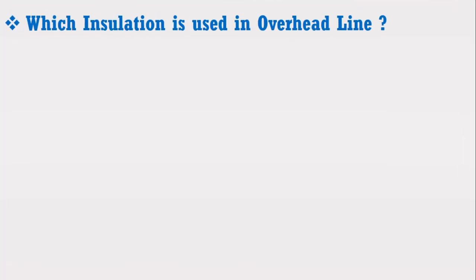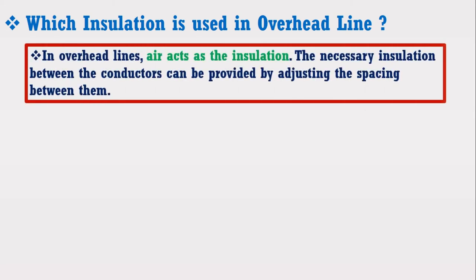Now I am going to ask one common sense question. Have you ever noticed what type of insulation is used across the overhead transmission line conductors? One may reply that he has not seen any insulation wrapped across the conductor. However, this is not true. In overhead lines, air acts as the insulation. The necessary insulation between the conductors can be provided by adjusting the spacing between them.